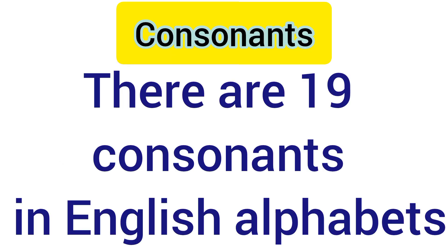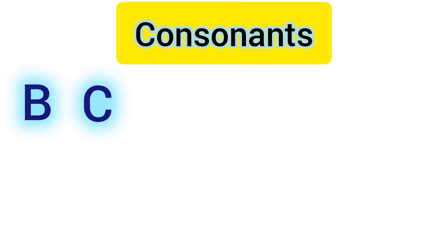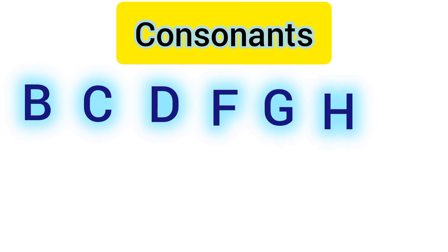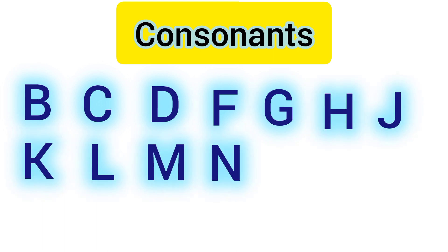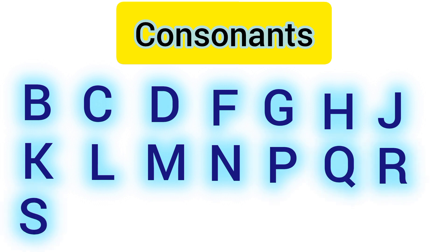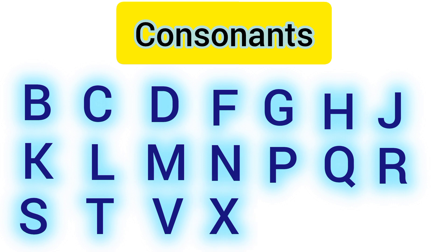And the rest of the nineteen are consonants — the remaining nineteen letters are consonants. For example: B, C, D, F, G, H, J, K, L, M, N, P, Q, R, S, T, V, X, Z.